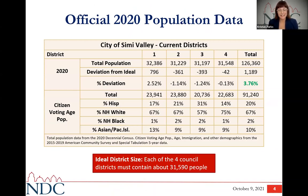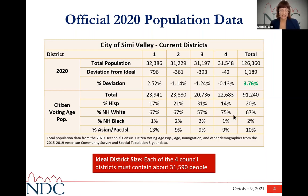Despite the delays in the US Census Bureau processing data this year, we do finally have official population numbers, which have also been adjusted by the state of California. In the City of Simi Valley, the 2020 census counted 126,360 people. You can see the breakdown of population for each of the four districts adopted in 2018. We are looking for an ideal district size — each district should be pretty equal to every other district so that each council member represents about the same number of people. Taking the total population of 126,360 and dividing by four gives us an ideal population size of 31,590 people per district.